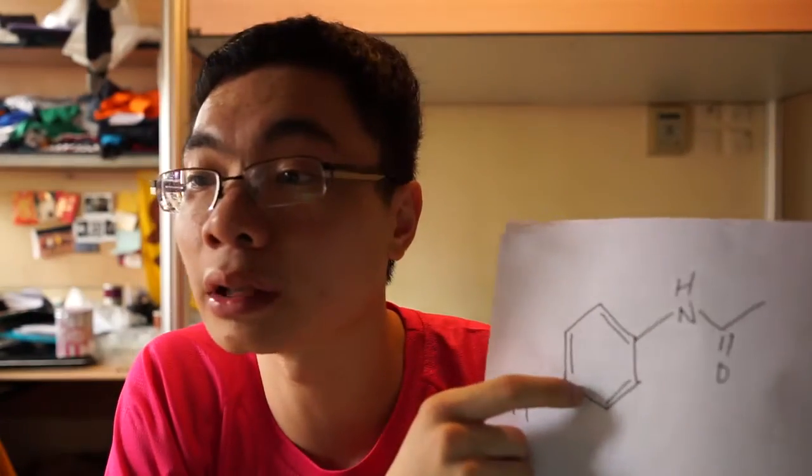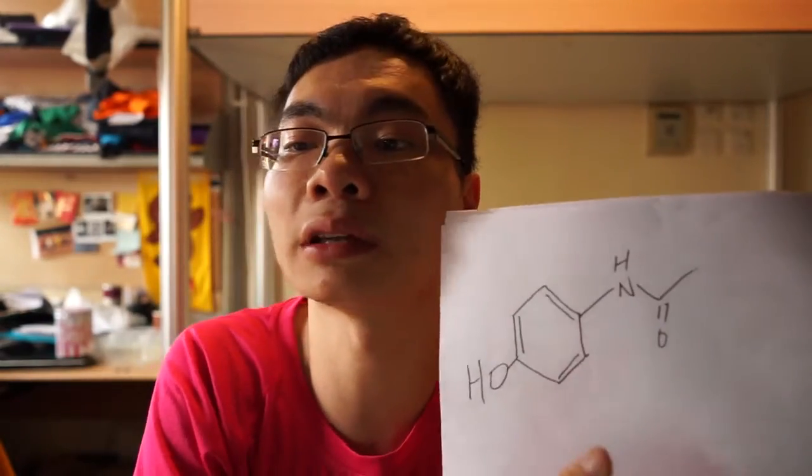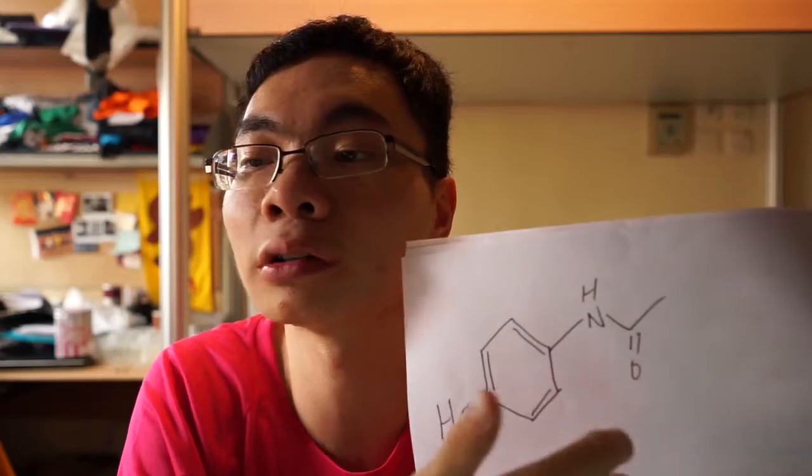The IUPAC name is N-(4-hydroxyphenyl)-ethanamide. The structure consists of a benzene ring substituted by a hydroxyl group and the nitrogen atom in the amide group in the para 1,4 pattern.